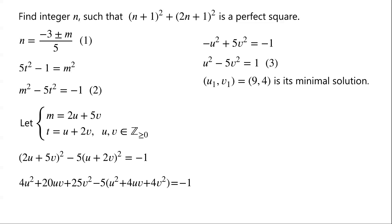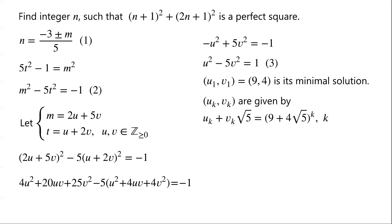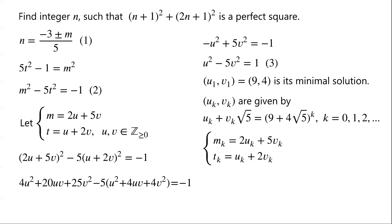We know that (9, 4) is the minimal solution of this Pell's equation. Therefore, all non-negative integer solutions (uₖ, vₖ) are given by uₖ + vₖ√5 = (9 + 4√5)^k, where k = 0, 1, 2, and so on. Once we find a solution (uₖ, vₖ), we compute mₖ = 2uₖ + 5vₖ and tₖ = uₖ + 2vₖ. Then from equation 1, nₖ = (−3 ± mₖ) / 5.